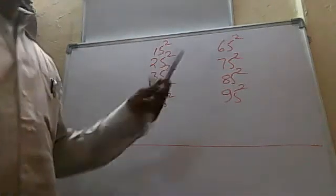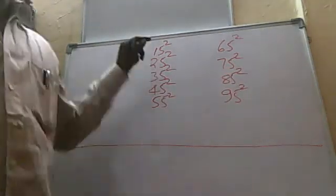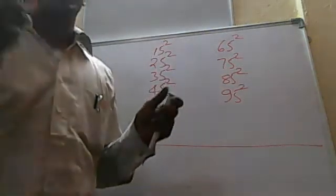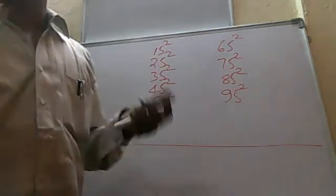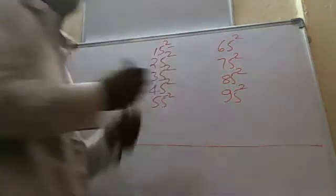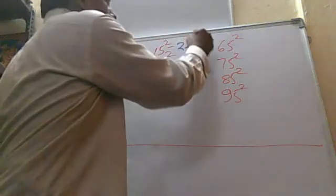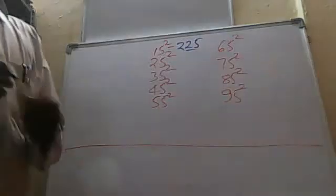Okay, so now, how to find its square? The method is: 10th digit into next number. The 10th digit is 1, after that is 2. So 1 into 2 is equal to 2. Now the last 2 digits are always 25.